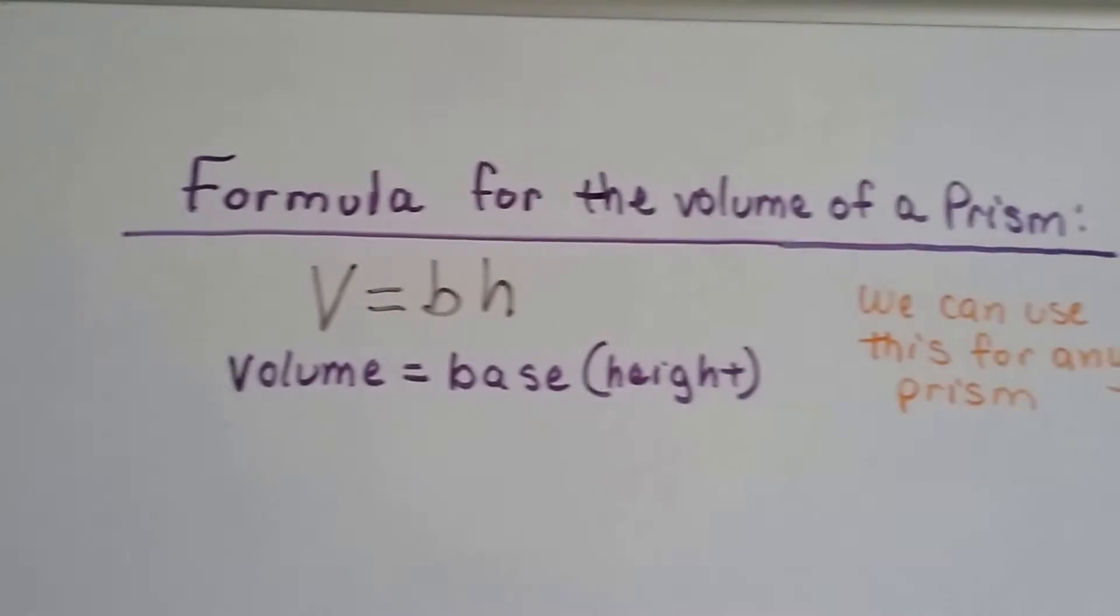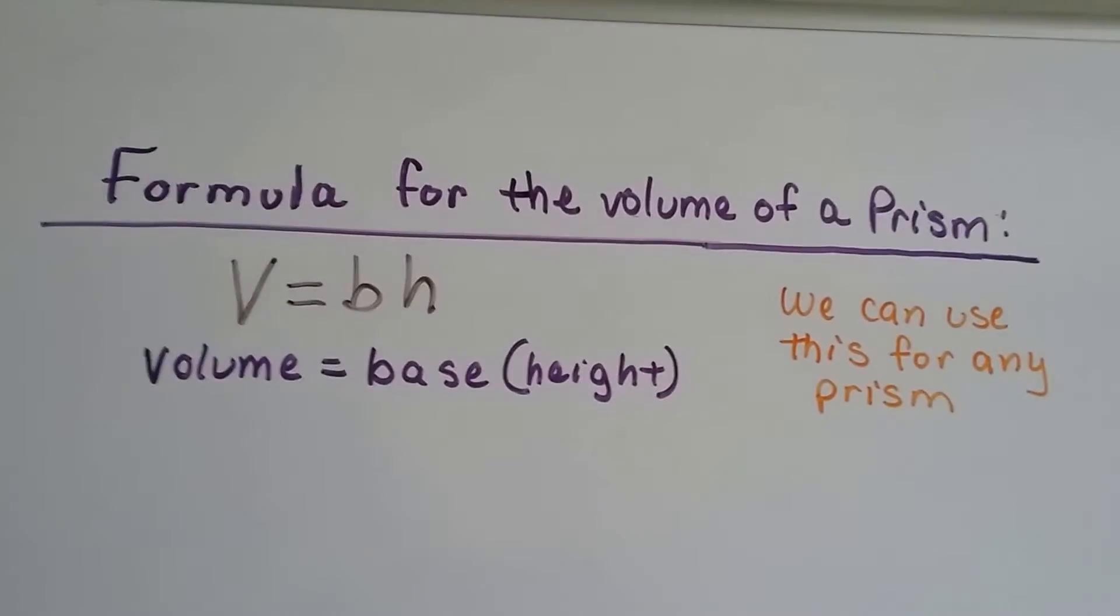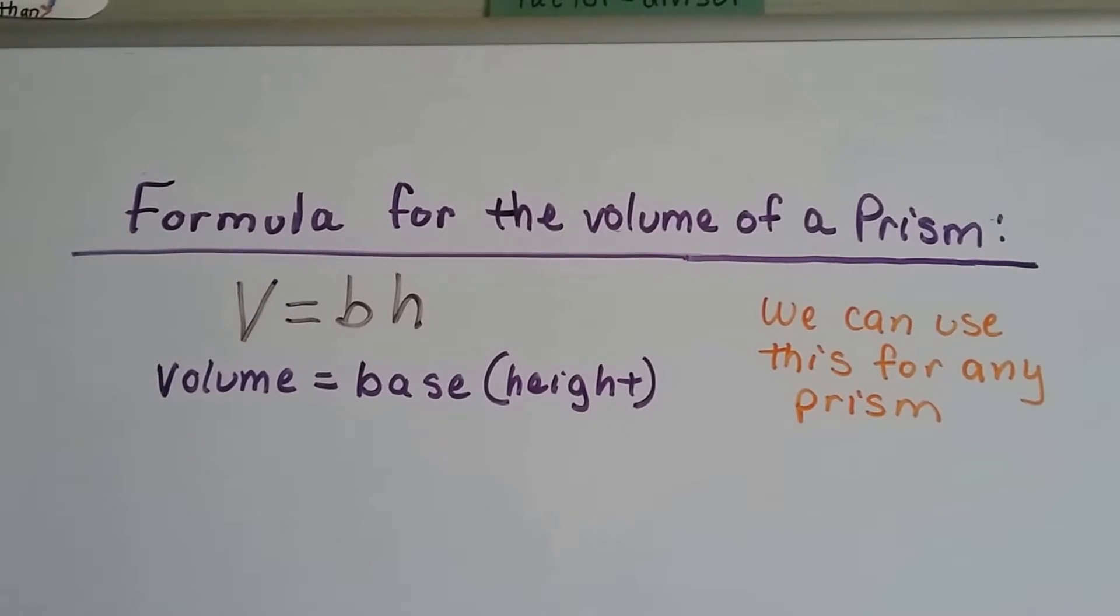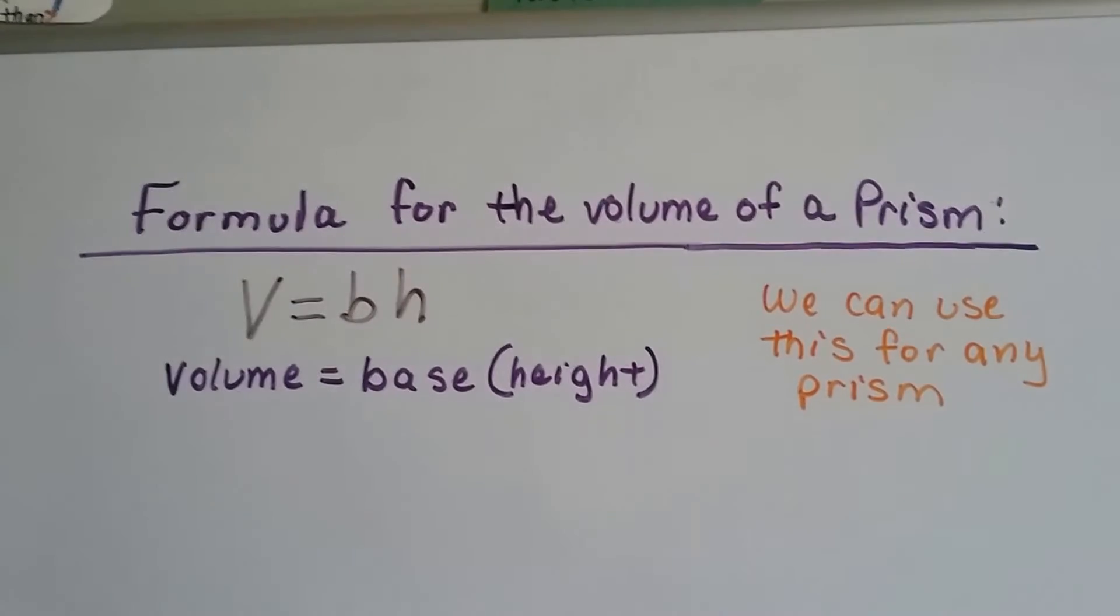This is the volume of a prism formula. v equals bh is volume equals the base times the height, and we can use this for any prism.